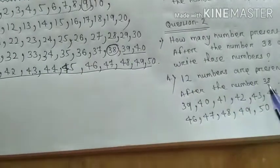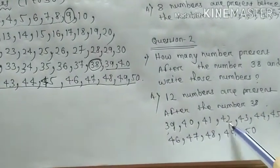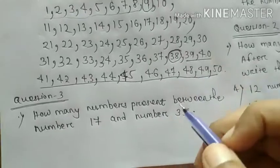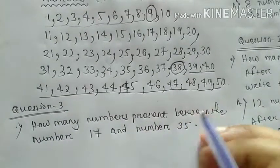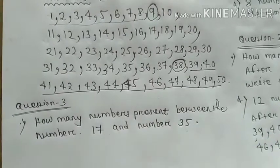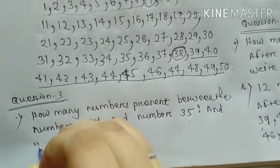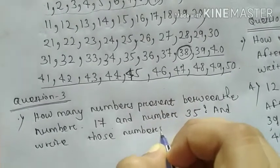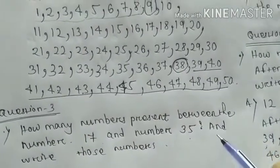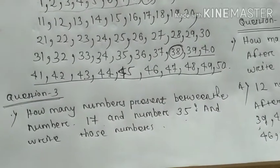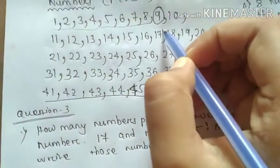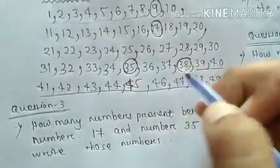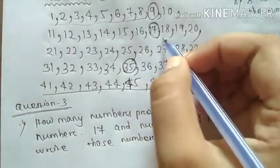Question 3. How many numbers present between the number 17 and number 35? And write those numbers. How many numbers present between the number 17 and number 35? And write those numbers. Where is the number 17? 17 is here. So round up this number 17, yes or no? And where is the number 35? Here is the number 35. Okay. So how many numbers present between 17 and 35? These numbers are.